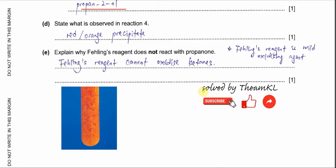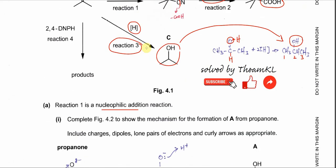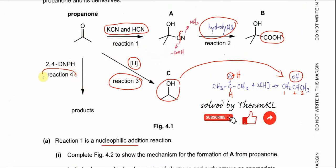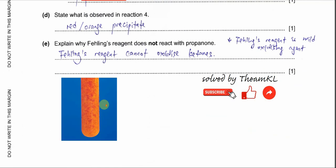Part D: state what is observed in reaction 4. Reaction 4 is propanone reacting with 2,4-DNPH. When propanone is mixed with 2,4-DNPH, you will see a red or orange precipitate form.